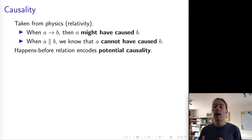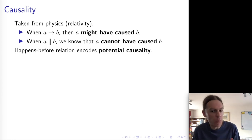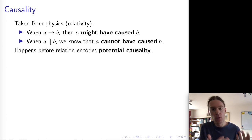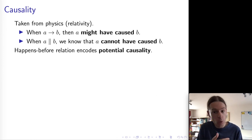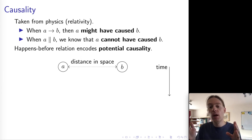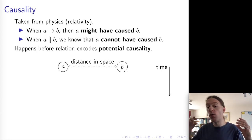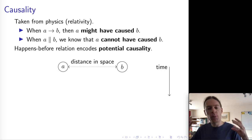That's the happens-before relation, and it is very closely connected to the concept of causality in distributed systems. If A happened before B, then it might be the case that A caused B or influenced B — there's some information flow from A to B. Whereas if events A and B are concurrent, we know A cannot have caused B and B cannot have caused A — there's no causal relationship between the two. This concept of causality is taken from physics, where people reason about events happening far apart in space and the time it takes light to travel between them.